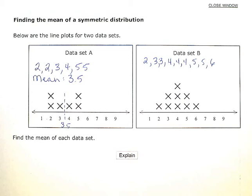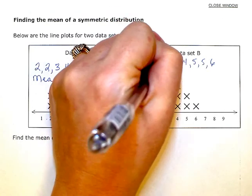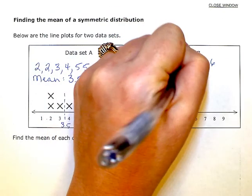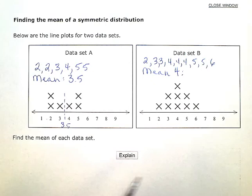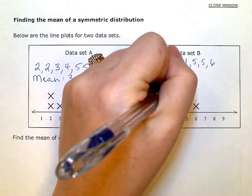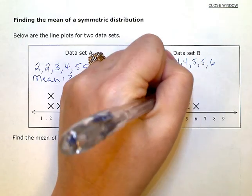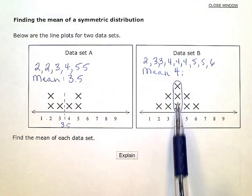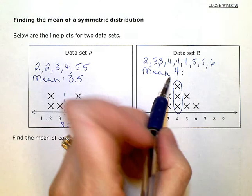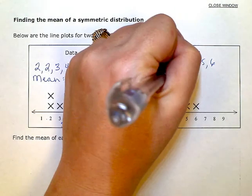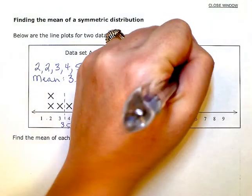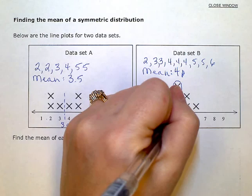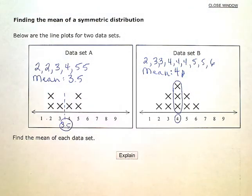So the mean here, or the average, is 4. And we can see that in the graph. Because 4 is right in the middle and has the most x's, right? 4 is weighted the most here. So the mean, let me put my dots here. Or the average there is 4 versus 3.5 over here.